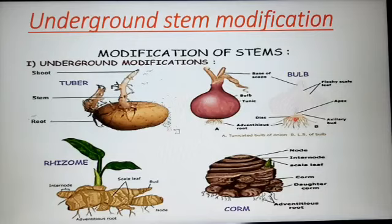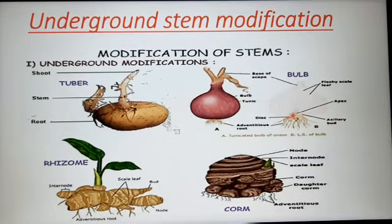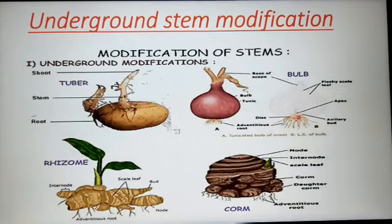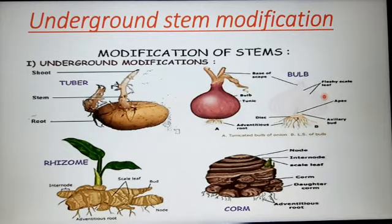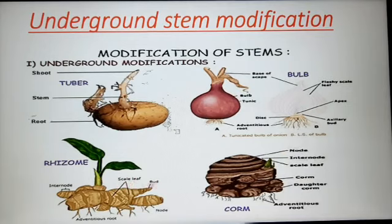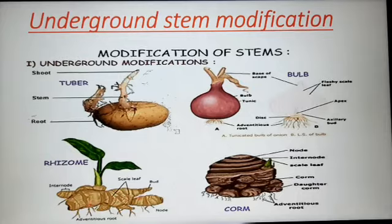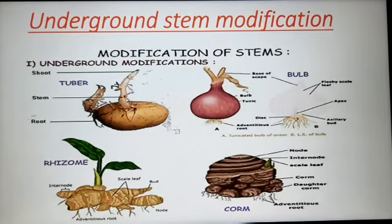It has a short, flattened, disc-like stem which has numerous scaly leaves. When you cut an onion, you can see this layered texture — these are the scaly leaves, and the white portion is your stem — the reduced stem. The bulb has a terminal bud which follows the leaf at the center. Now, you can see the rhizome. It is a thick and fleshy stem which grows horizontally near the soil surface. You can see the nodes and internodes — this is the stem for food storage. The example is ginger.